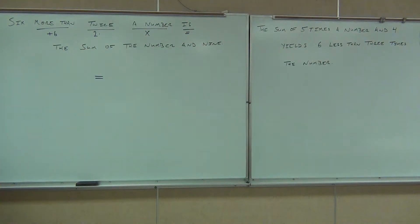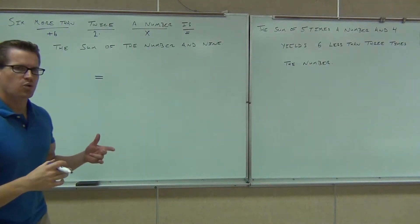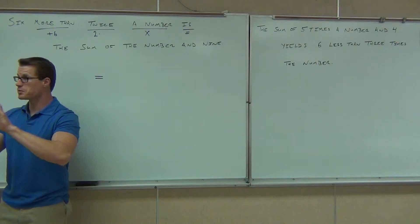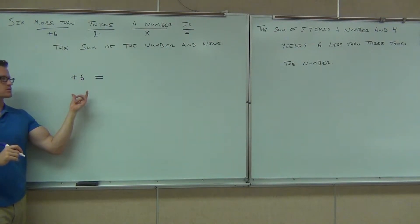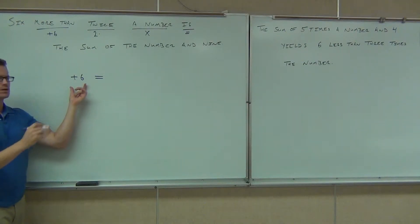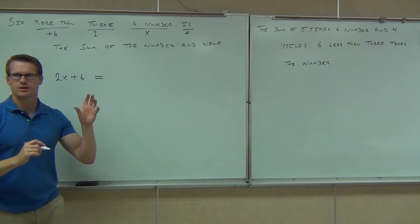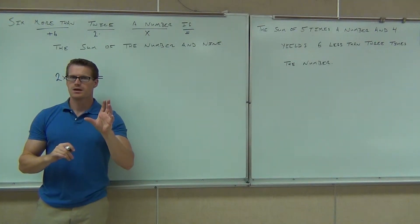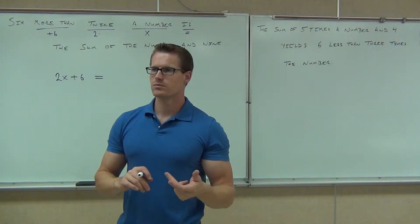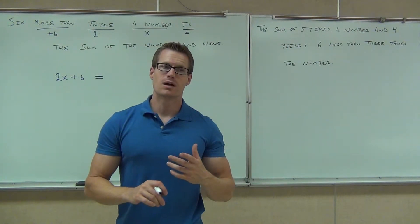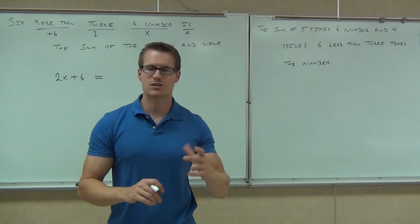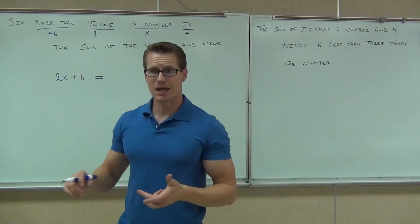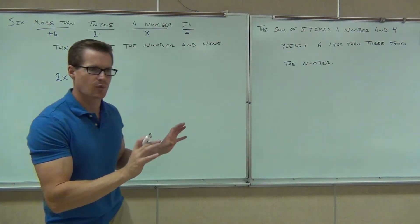Going old school with the x. So 'six more than twice a number' — 'six more than' means plus six at the very end. What am I taking six more than? Two x. So this equation should be two x plus six on the left-hand side. If you put six plus two x it will work out fine on this particular problem. However, if I had given you 'six less than,' you have to have that in a certain order because subtraction, unlike addition, is not commutative. Addition doesn't make any difference, but I'd like you to write it in the proper order.